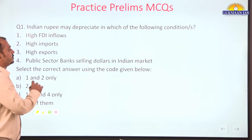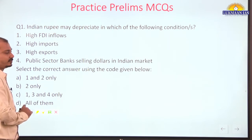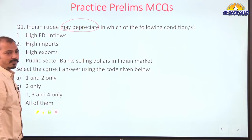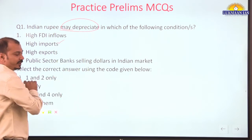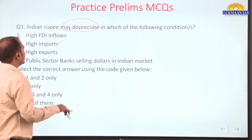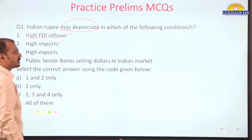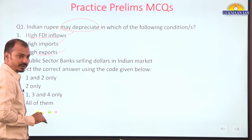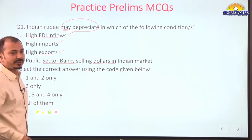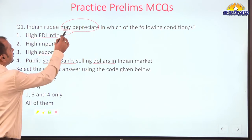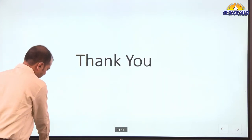In response to a question: high imports would result in appreciation stopping or reversing depreciation. High FDI inflows result in more dollars coming into the country, which appreciates the rupee. High exports also appreciate the rupee. Public sector banks selling dollars in the Indian market increases demand for Indian currency and again appreciates the rupee. So depreciation happens when these factors work in reverse — the correct answer should be B.